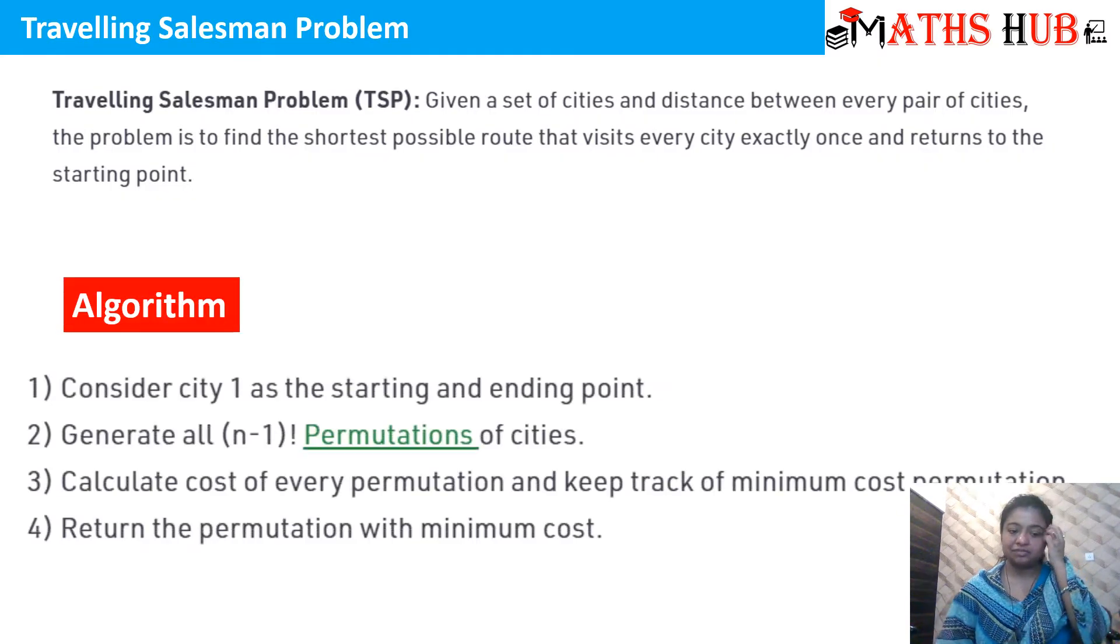The algorithm says consider city 1 as the starting and ending point. Whichever city we need to start from, we mark that city as number 1 vertex and we have to start and terminate at the same vertex. Now the next step is generate all the n-1 permutations of those cities.